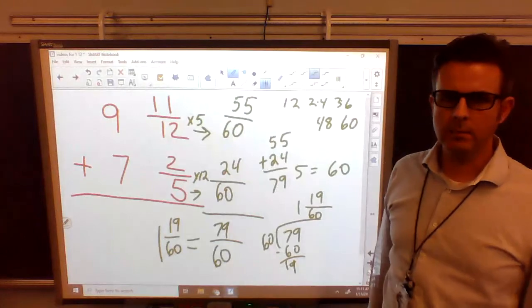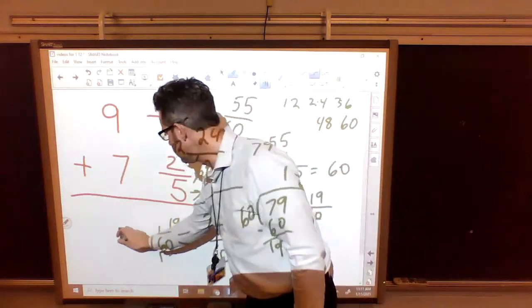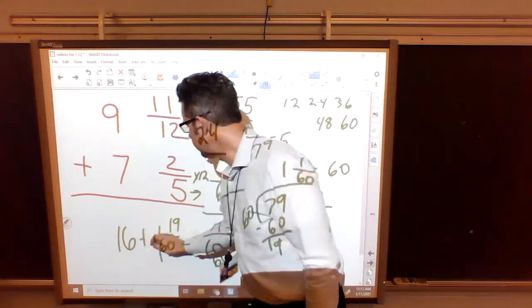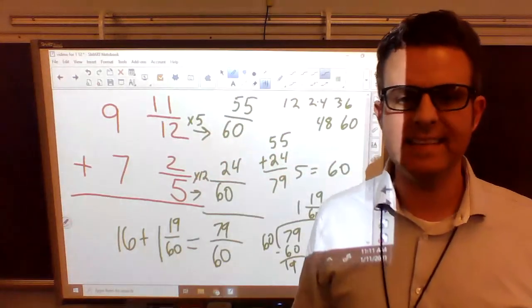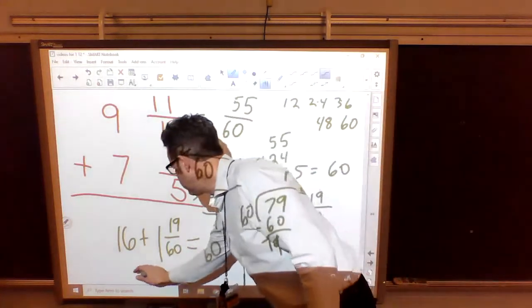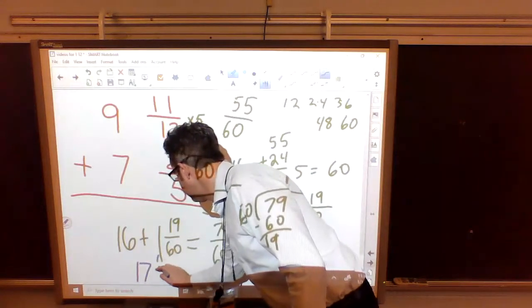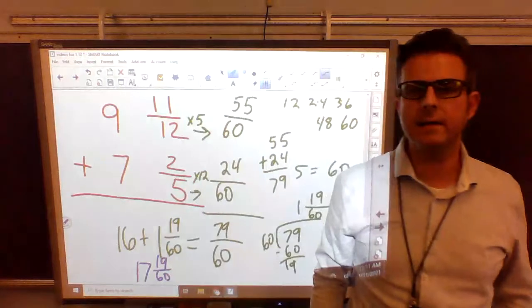Now we have to do the whole numbers. What's 9 plus 7? 9 plus 7 is 16. So now we have to do 16 plus 1 and 19/60. Well, what's 16 plus 1? 16 plus 1 is 17 and 19/60. That is your final answer.